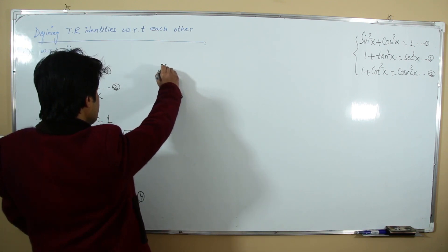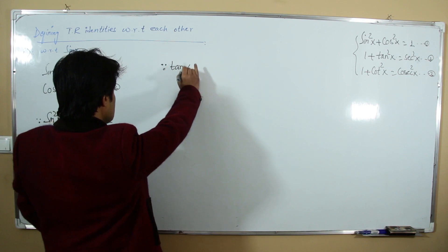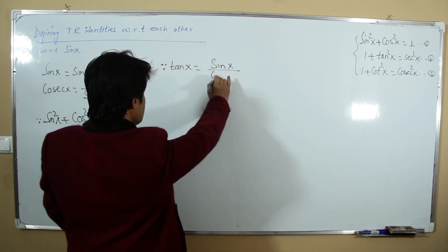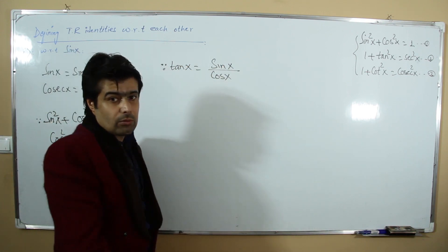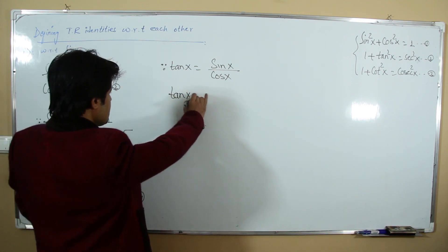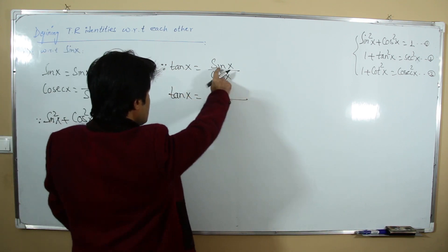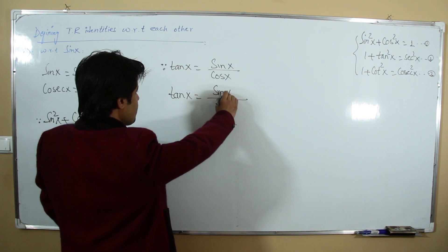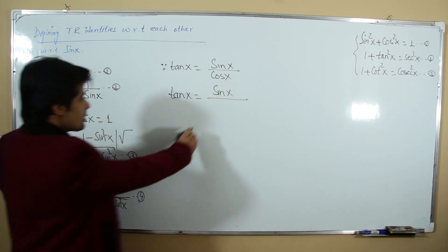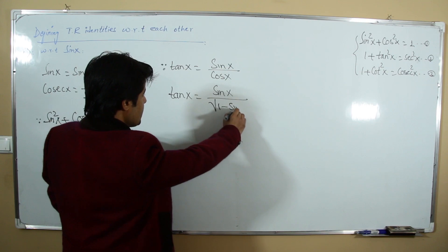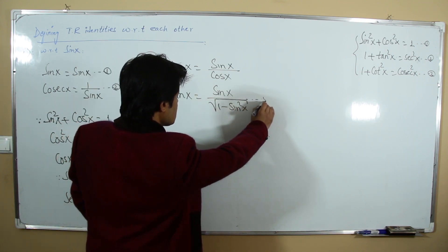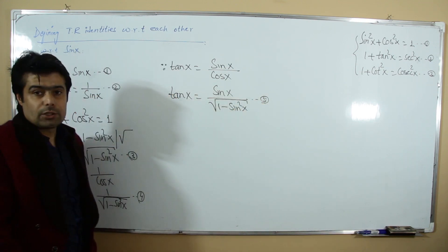For tangent and cotangent: tangent x = sin x / cos x. So tangent in terms of sine is sin x / √(1 - sin²x). This is our fifth relation.